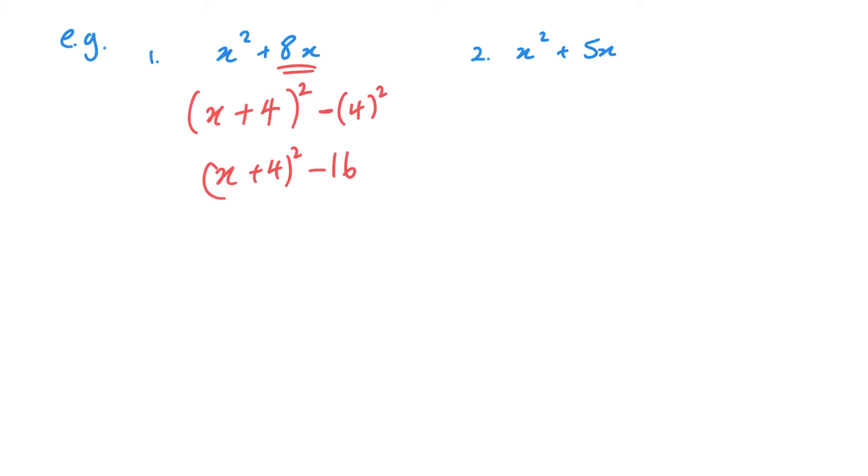Same thing over here where I've got an odd number. It's not as straightforward, but the process is the same. This is going to be x plus half of this, which is 2.5, but it's easier if you leave it as a fraction. So x plus 5 over 2 squared minus 25 over 4.